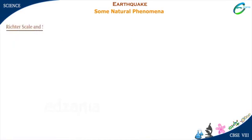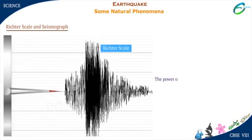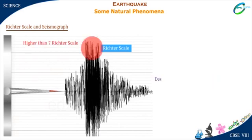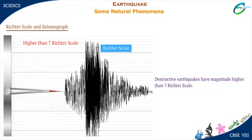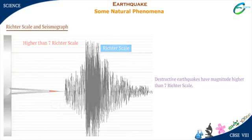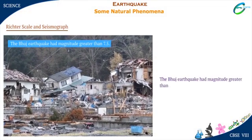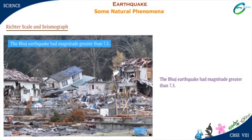The power of an earthquake is expressed in terms of a magnitude on a scale called the Richter Scale. Destructive earthquakes have a magnitude higher than 7 on the Richter Scale. The Bhuj earthquake had a magnitude greater than 7.5.